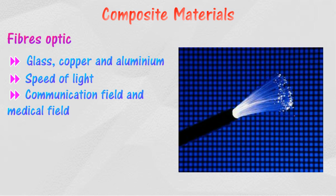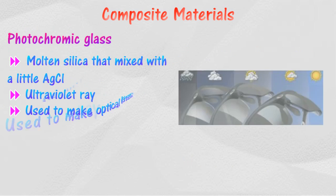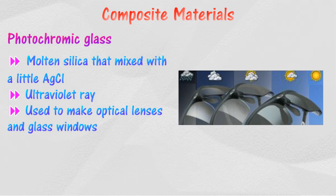Photochromic glass is produced from molten silica mixed with a little silver chloride. It becomes dark colored when exposed to bright light and bright when in the dark.